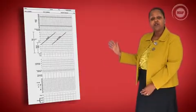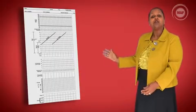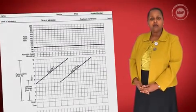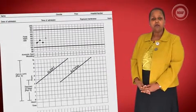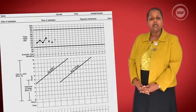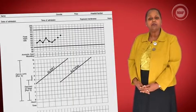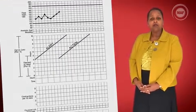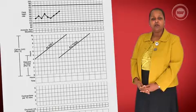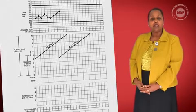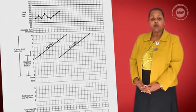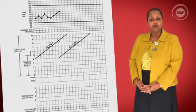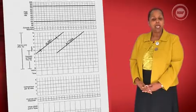A partograph is straightforward when you understand how to use it. It is crucial that you plot the first point in the correct place. After that, you simply need to make the correct observations and understand how they are plotted. Observations should be systematic and made at the correct frequency. For example, vaginal examinations should be made at least every four hours. The user should then understand how to plot on the graph, how to read the graph and how to make decisions about the woman's care.